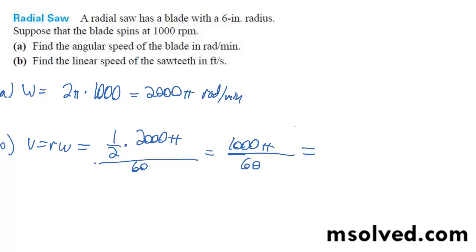So that's going to give us 500 over 30, which goes down to 50 pi over 3 feet per second.